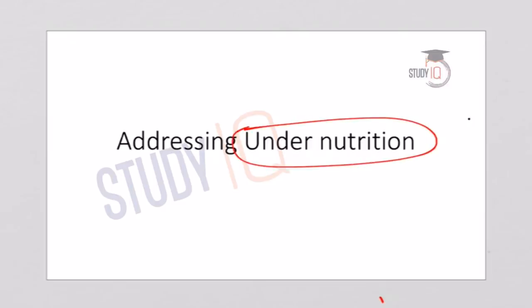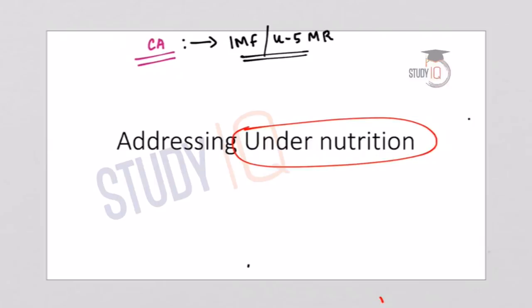Hello, my dear friends and welcome to StudyIQ. I am Joy C. Joy and today in this lecture we will discuss about addressing the undernutrition situation in India. If we analyze current affairs data from the past few years, it is evident that there is a decline in the infant mortality rate and the under-5 mortality rate in India. This is a significant achievement, a result of the various schemes and policies adopted by the government.